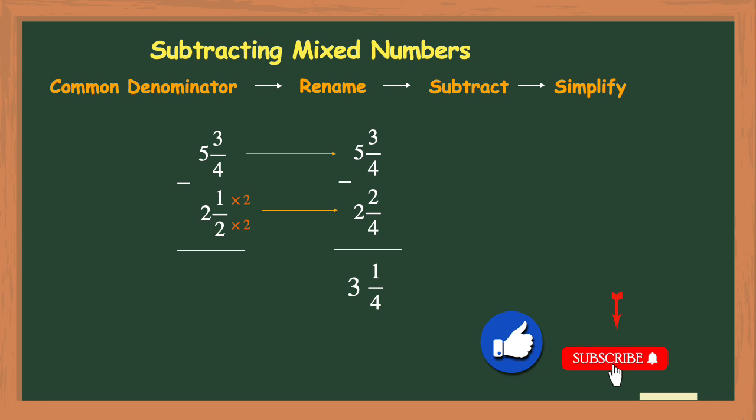In this case however, 1 fourth is not an improper fraction and 1 and 4 do not share any common factors other than 1. So our mixed number of 3 and 1 fourth is already simplified.